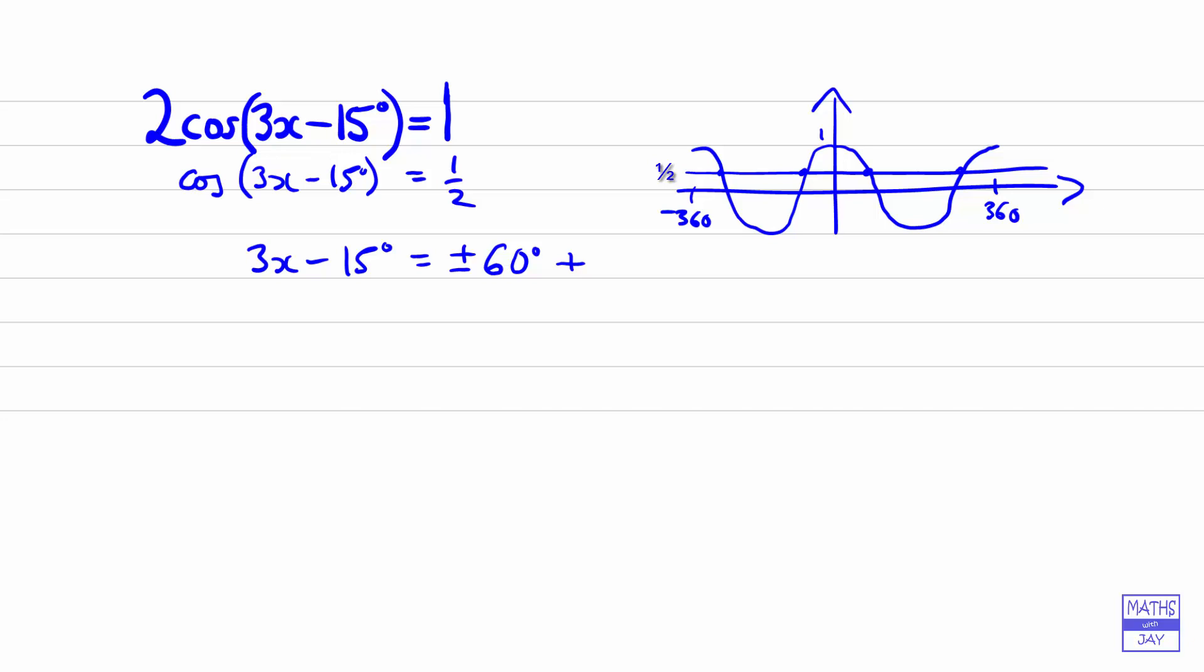And because we want the general solution, we know that to get all the other solutions we need to add on a multiple of 360 degrees. So we're going to add on 360n degrees, and n is an integer—it could be 2, 3, 9, 0, negative 1, whatever. This covers all the possible solutions.